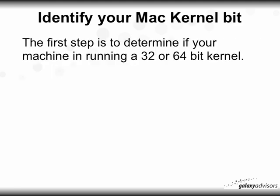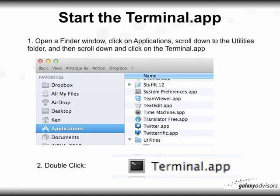So, identify your Mac kernel. The first step is to identify whether the machine is running a 32 or 64-bit kernel. To do that, we're going to start the terminal app. Open a Finder window, click on Applications as shown in the screenshot, and scroll down to the Utilities folder. Double-click inside the Utilities folder, then scroll down and click on the Terminal app as indicated in step two. Double-click the Terminal app.